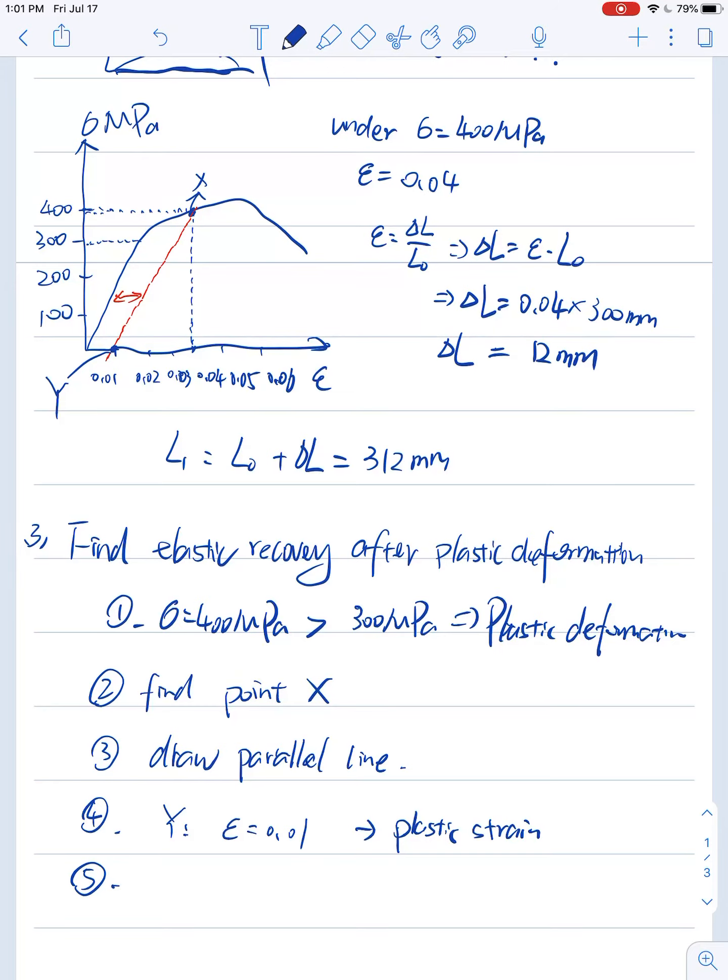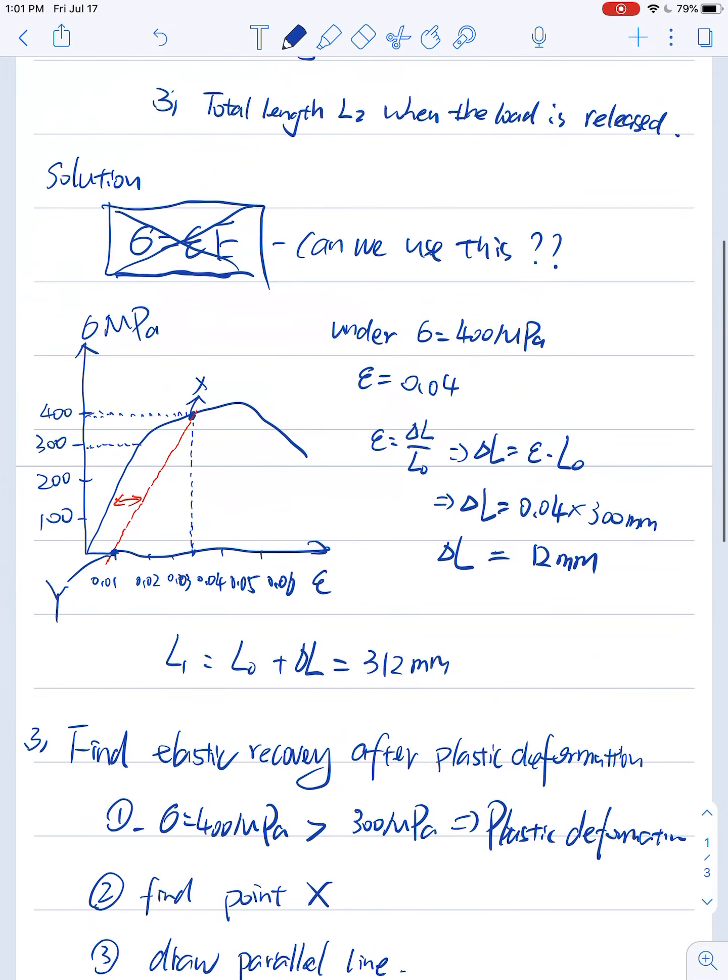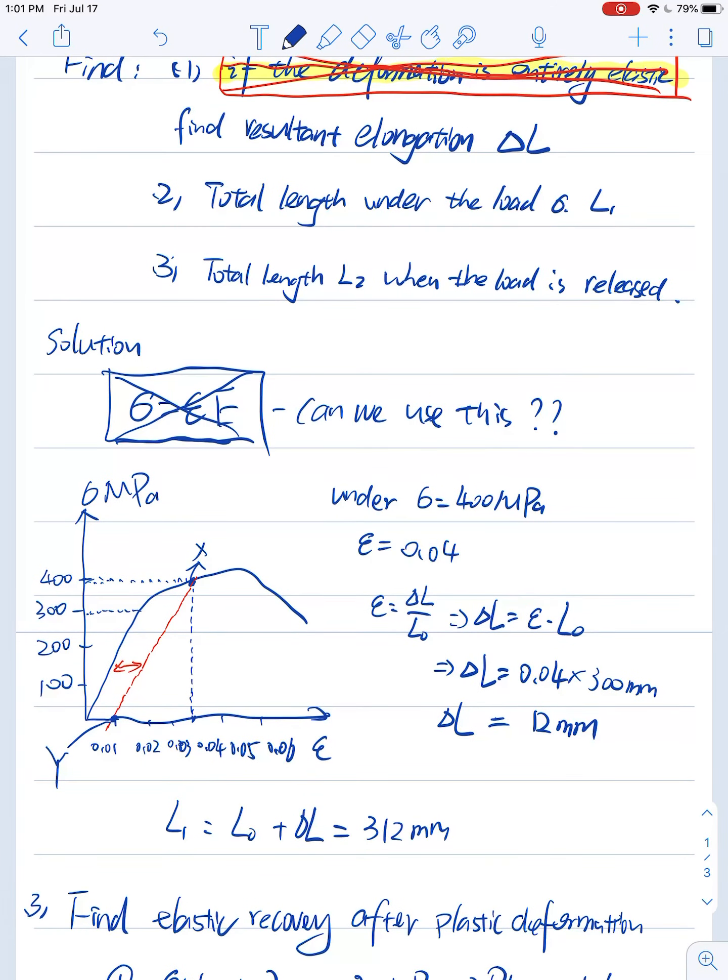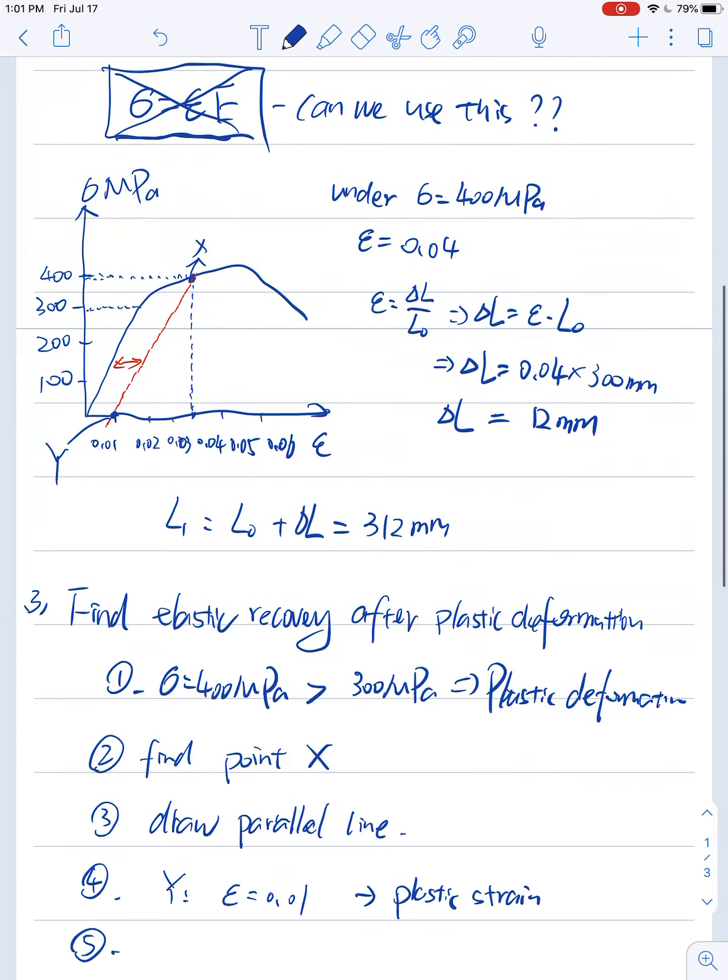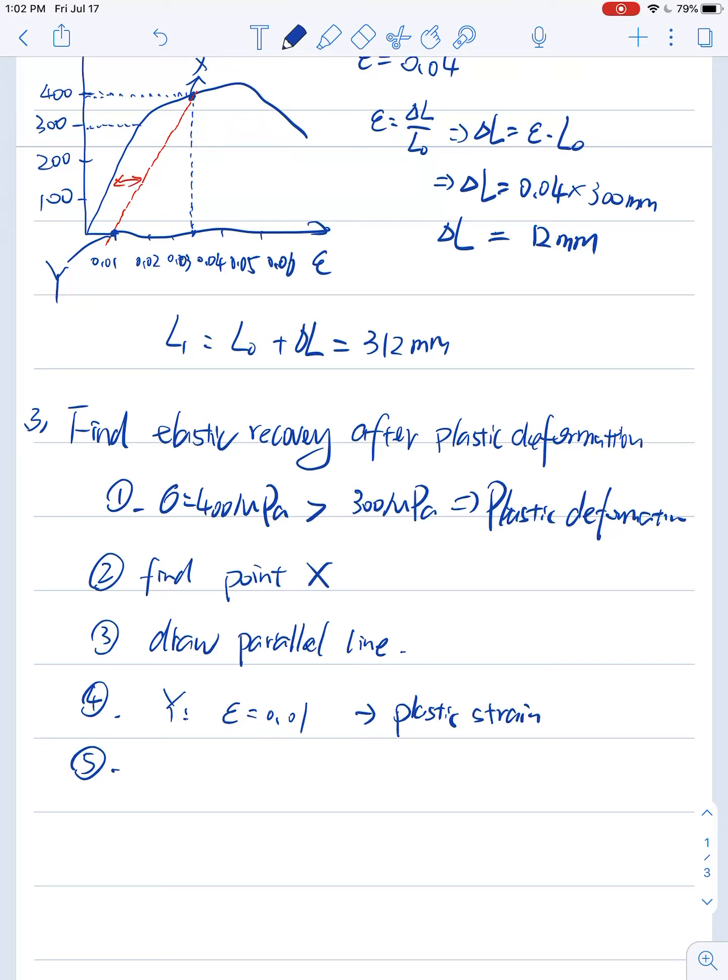And here, we try to find out what's the total length L2, so we know L2 should be the sum of the original length plus some delta L left inside of this alloy. And this delta L is related to this strain we just found out from step four, right?